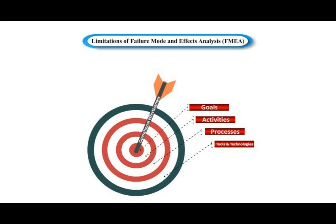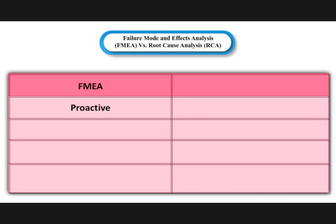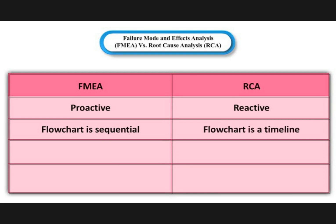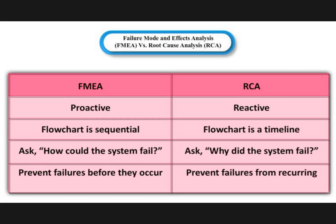Let's understand the limitations of FMEA. Failure Modes and Effects Analysis versus Root Cause Analysis: FMEA is proactive whereas RCA is reactive. In FMEA, the flowchart is sequential, whereas in RCA the flowchart is a timeline. FMEA asks 'how could the system fail?' while RCA asks 'why did the system fail?' FMEA prevents failures before they occur, whereas RCA prevents failures from recurring.